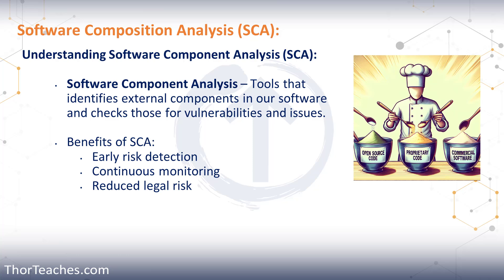The SCA process automatically identifies the open source and third-party components in our software application and then checks those components for known security vulnerabilities, license compliance issues, and outdated versions. The SCA tools work by scanning the application source code, the bytecode, or the binary files, and then compare that against a database of known components and their associated metadata. That metadata can include the version number, the license type, and known security vulnerabilities based on the National Vulnerability Database and the Common Vulnerabilities and Exposures list.